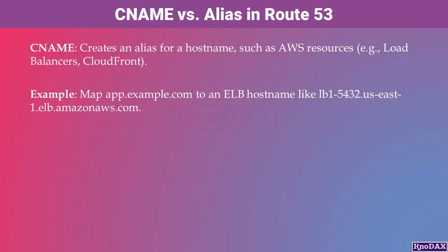This is where a CNAME record comes into play. It allows you to create an alias for the ELB hostname, simplifying access for your users while managing traffic efficiently. This makes Route 53 an essential tool for seamless domain name management in AWS.